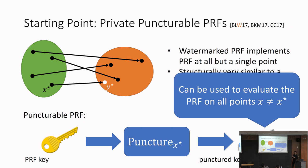A puncturable PRF is actually very simple to build — even the original construction of pseudorandom functions from pseudorandom generators by Goldreich, Goldwasser, and Micali gives a puncturable PRF. This requires just one-way functions, the minimal assumption needed for most non-trivial cryptography.